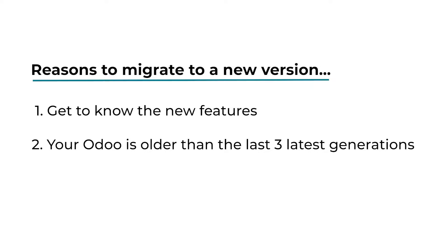Second, is your Udo version older by three generations or more? Udo have improved their performance both in speed and security. Newer versions of Udo mean newer versions of Postgres, OS, Python, and other libraries. Those improvements have a high contribution to the speed and security of your system.